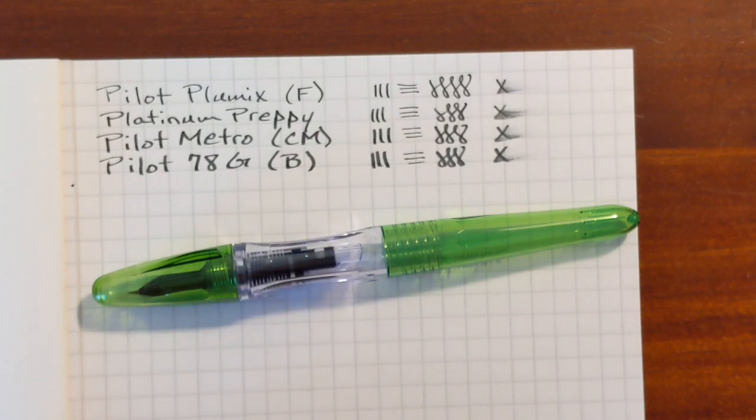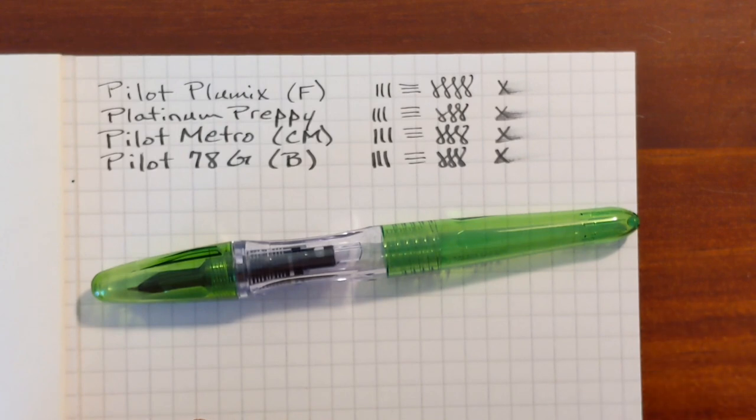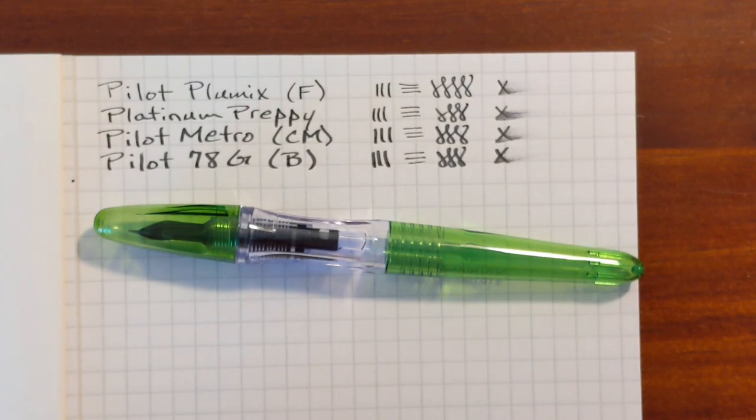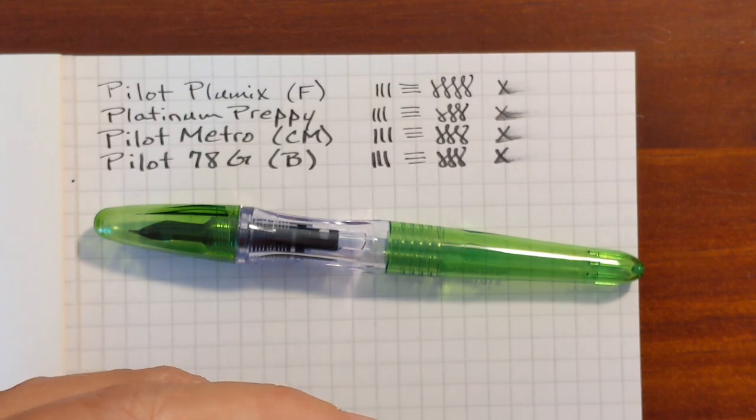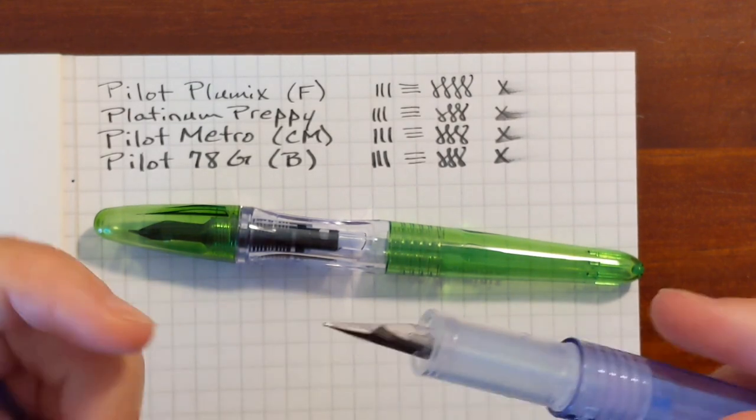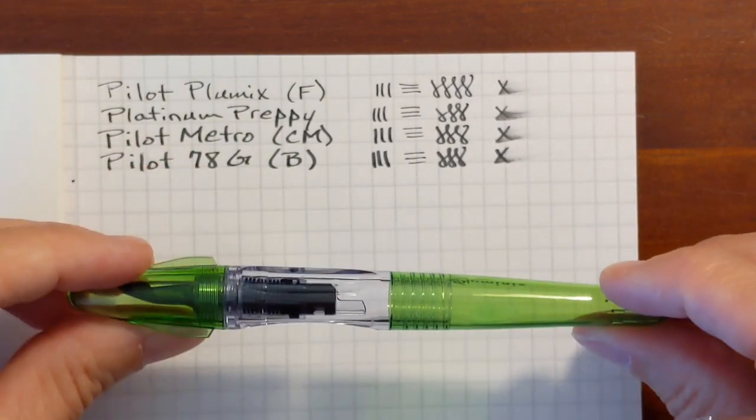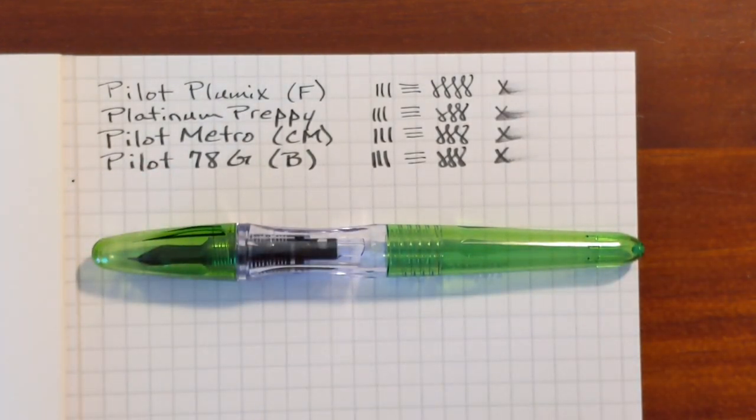I had to get this one on eBay. I looked at Amazon UK and they had these, but only the medium, and I think the medium is basically like the cursive medium that you can get in the Metropolitan. In order to get the fine, I had to go to eBay and it came from Hong Kong, and they had several colors. I like this green. That's something kind of unique to my collection.